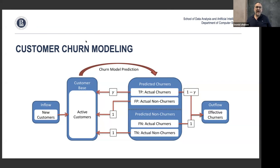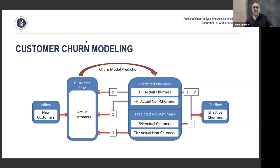Based on these four cases, we can calculate expected profit by assigning financial values to each event — the cost of losing a customer, the value of correctly predicting churn, the cost of unnecessary discounts. We can then calculate expected profit and, based on that, select the optimal operating parameter for our model — the optimal threshold.